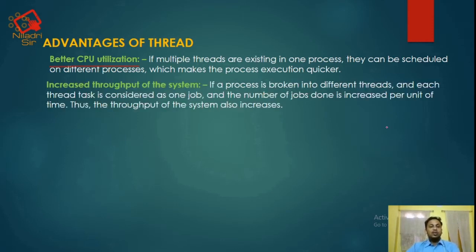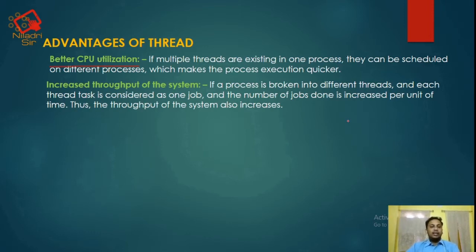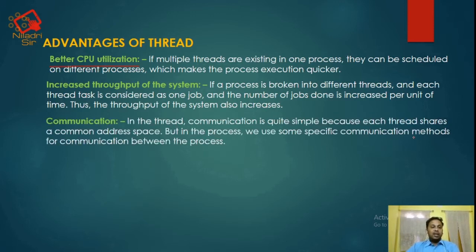Next, increased throughput of the system. If a process is broken into different threads and each thread's task is considered as one job, the number of jobs done increases per unit of time, thus the throughput of the system also increases.